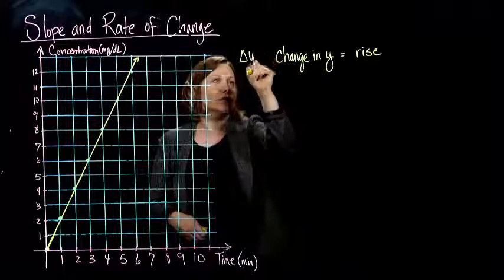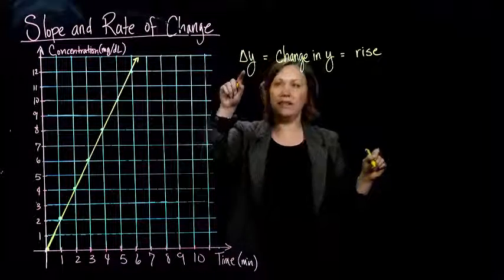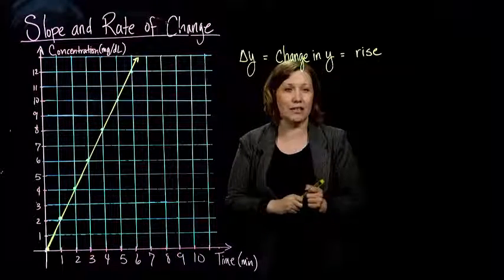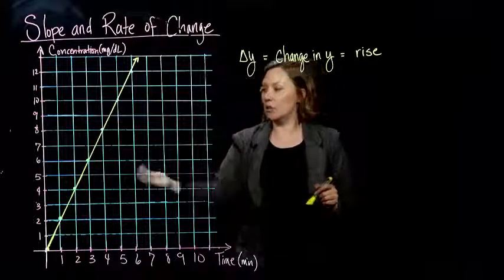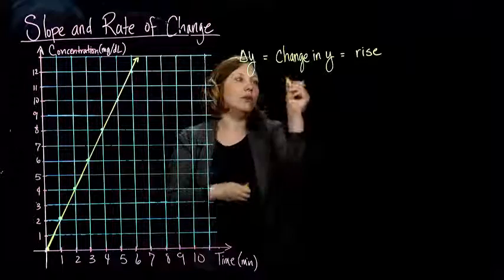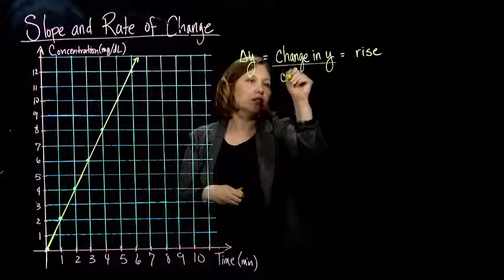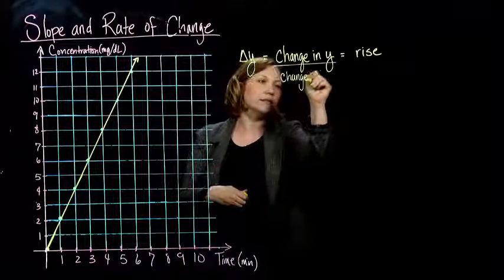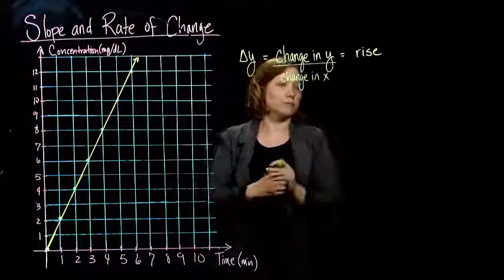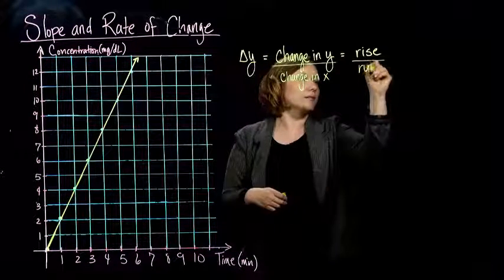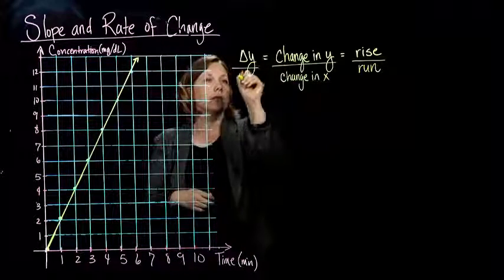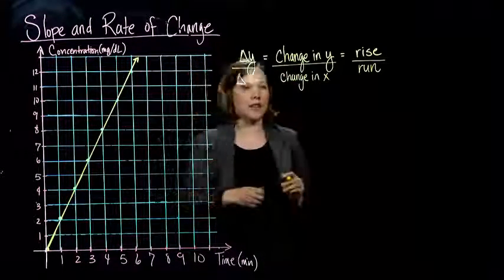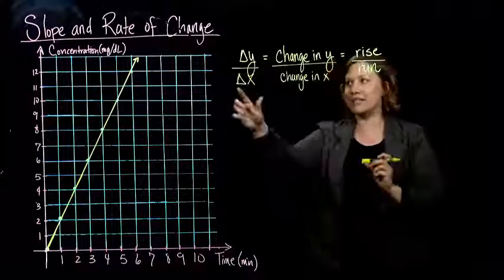Sometimes, if we use fancy notation, we use this delta, right? That means change in. So we take the change in the y. So how fast did it go up over the change in the x or the run? Or if we're using fancy notation, we would say delta x.